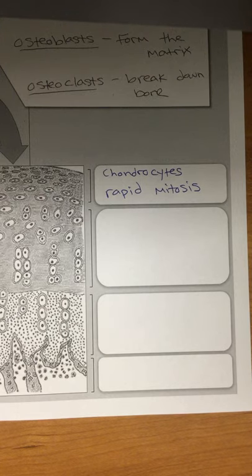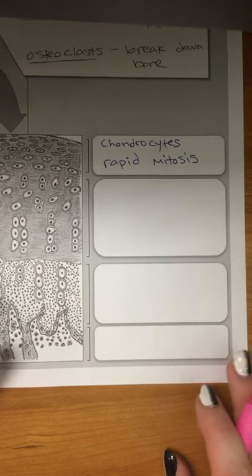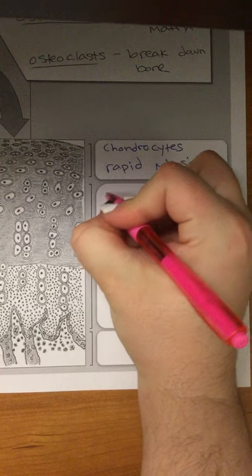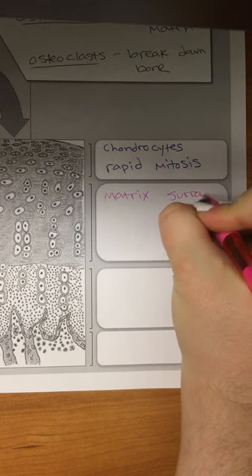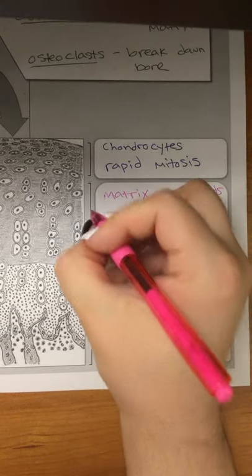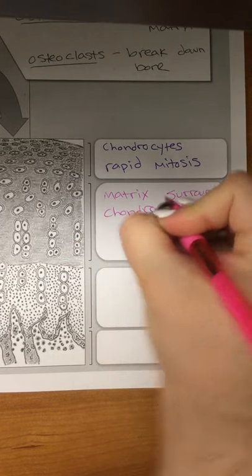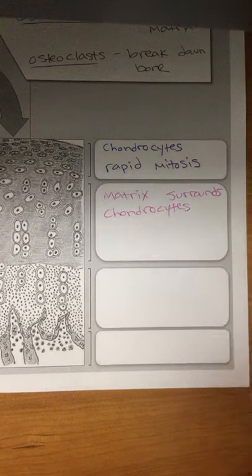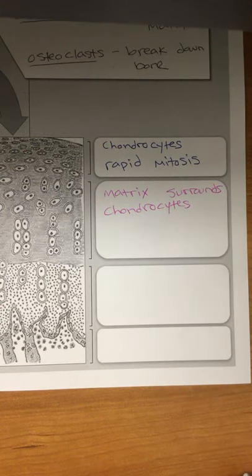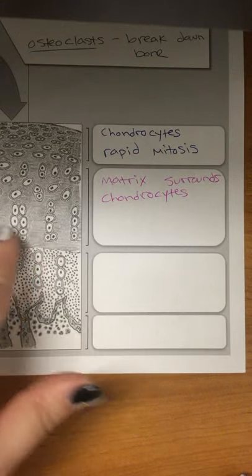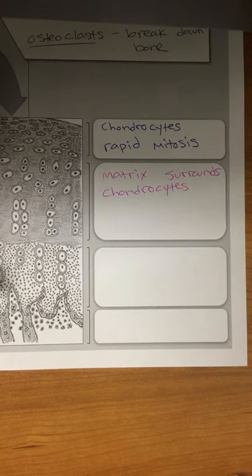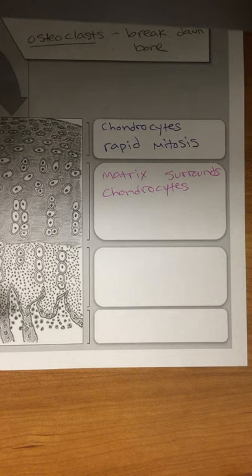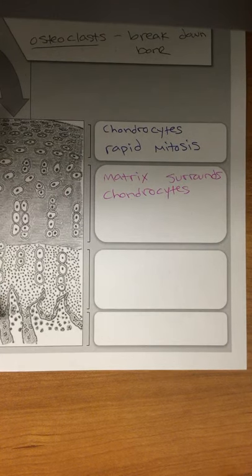Then they start to make matrix, and the matrix surrounds those chondrocytes. Once chondrocytes get cut off, you can see them here getting cut off in their individual holes, then they start to die because chondrocytes rely on diffusion from the other tissues and now they're cut off from those tissues.